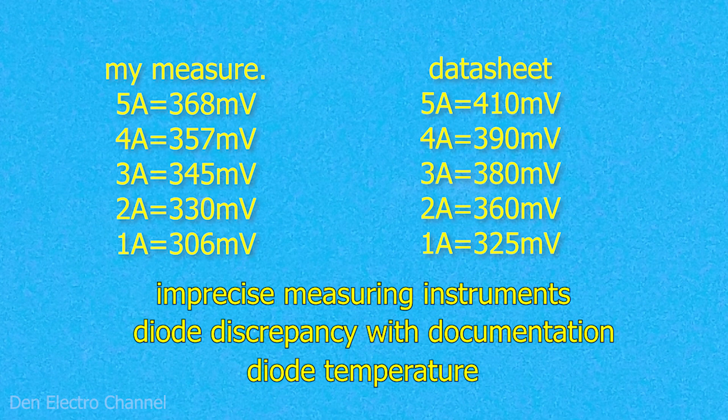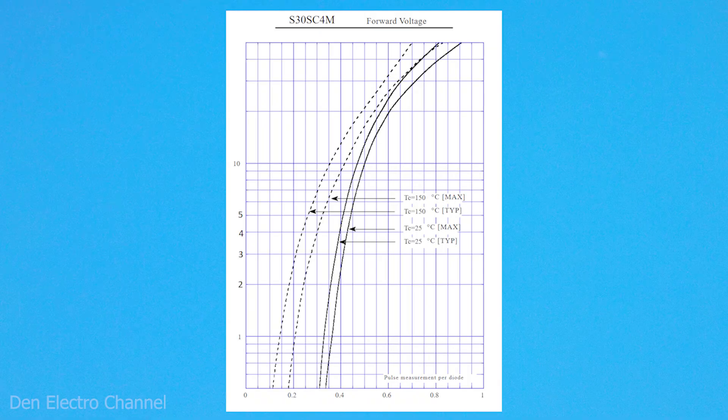In general, all these nuances affect the measurements. And therefore, when you look at the datasheet on your diode, you do not need to look for exact matches with your readings there. Let's go back to the datasheet again and look at the top of the graph.